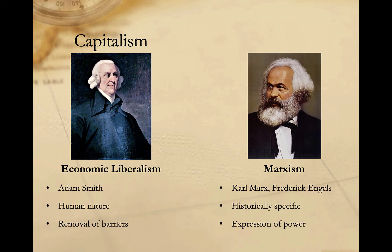The second group is rooted in the Marxist critiques of Karl Marx and Friedrich Engels. Unlike liberals who see capitalism as a simple expression of human nature, Marxists tend to view capitalism as a historically specific system that emerged because of economic and property relationships, and the specific exercise of power in Great Britain and the Netherlands. Its global spread was rooted not in human nature, but in the power of Europe during the colonial period. Regardless of which theoretical explanation we adhere to, it's undeniable that the global political economy has undergone radical transformations over time.